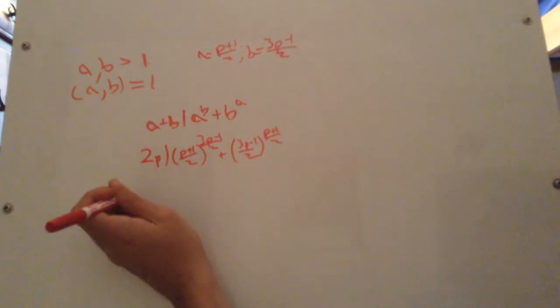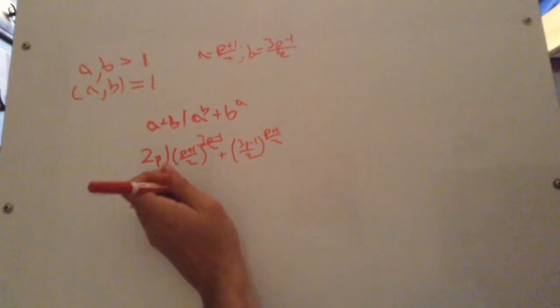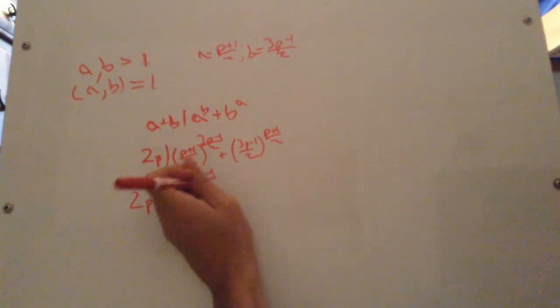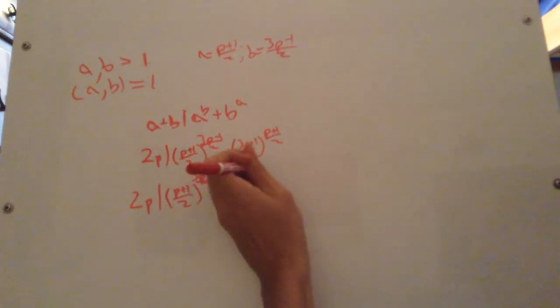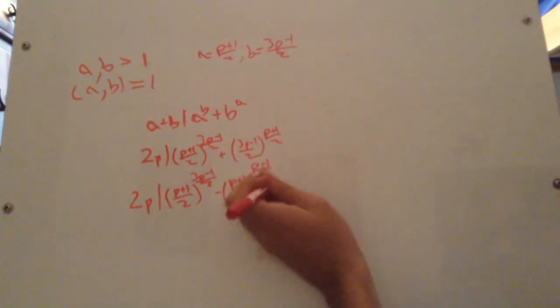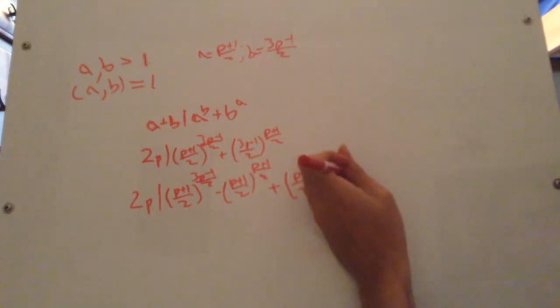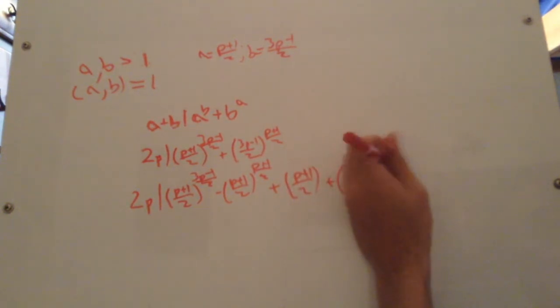Get rid of the p plus 1 over 2 and you have 2p divides p plus 1 over 2 to the 3p minus 1 over 2 minus p plus 1 over 2 to the p plus 1 over 2. So, plus p plus 1 over 2 plus 3p minus 1 over 2 to the p plus 1 over 2.